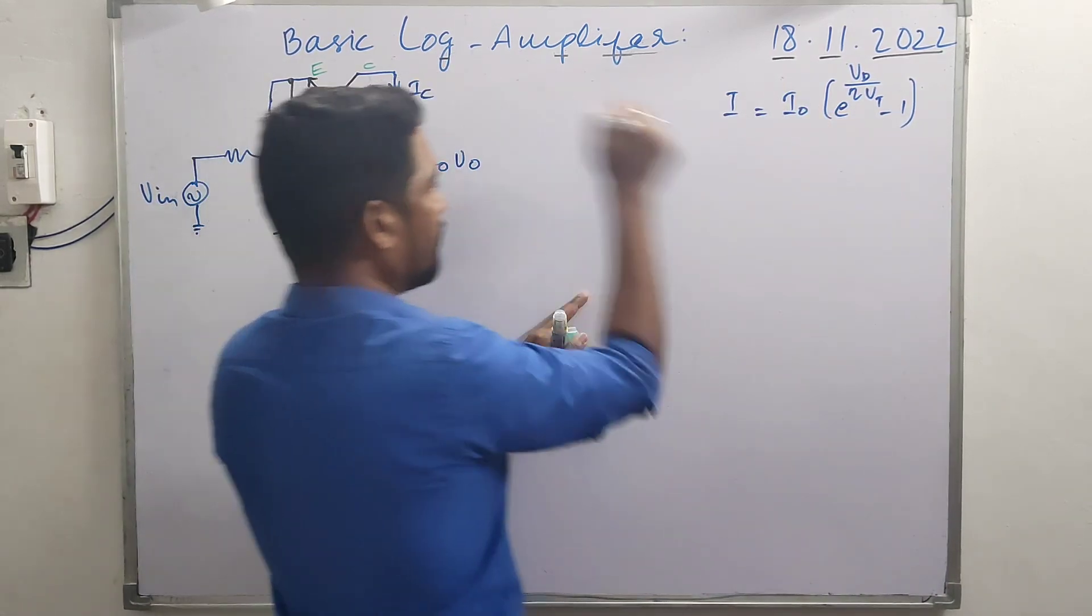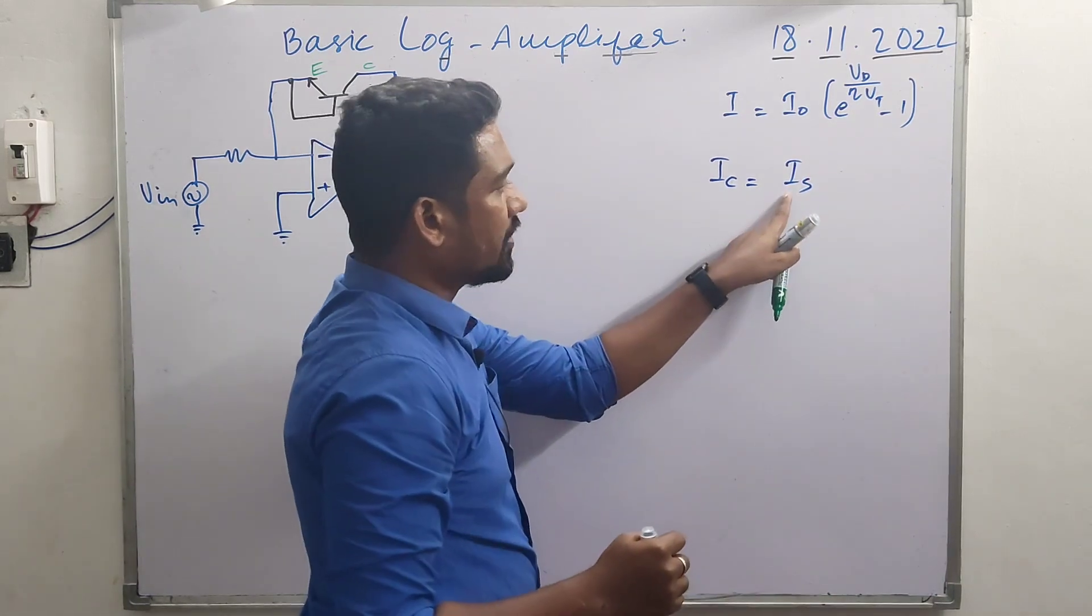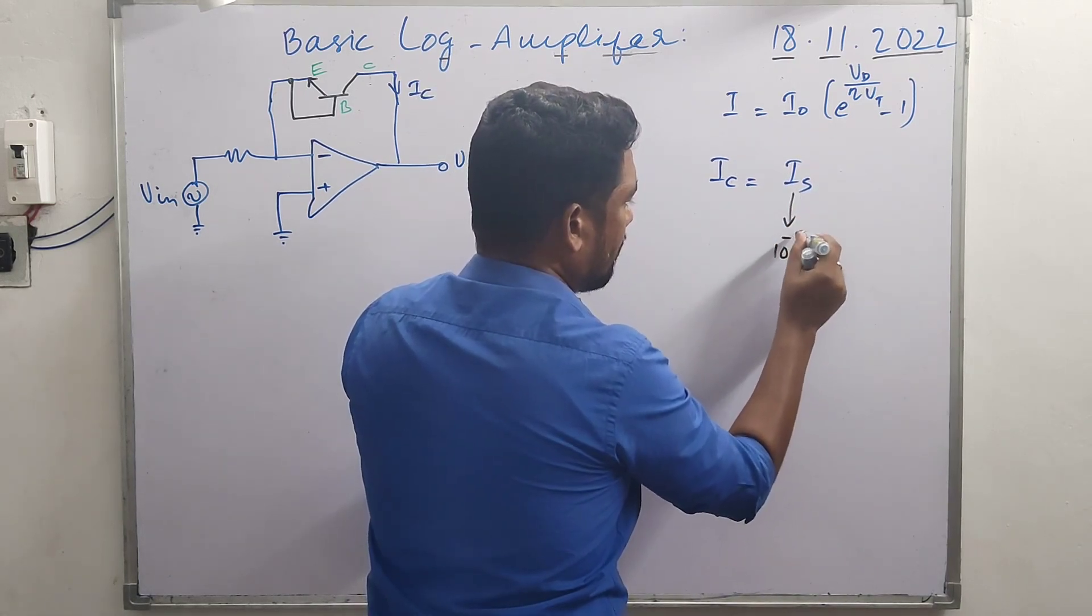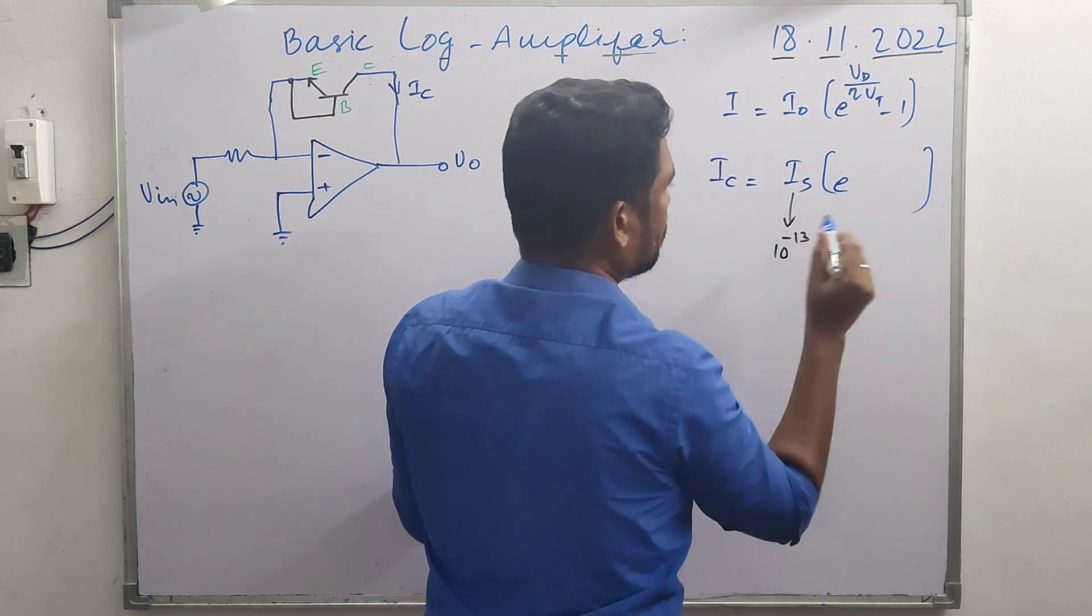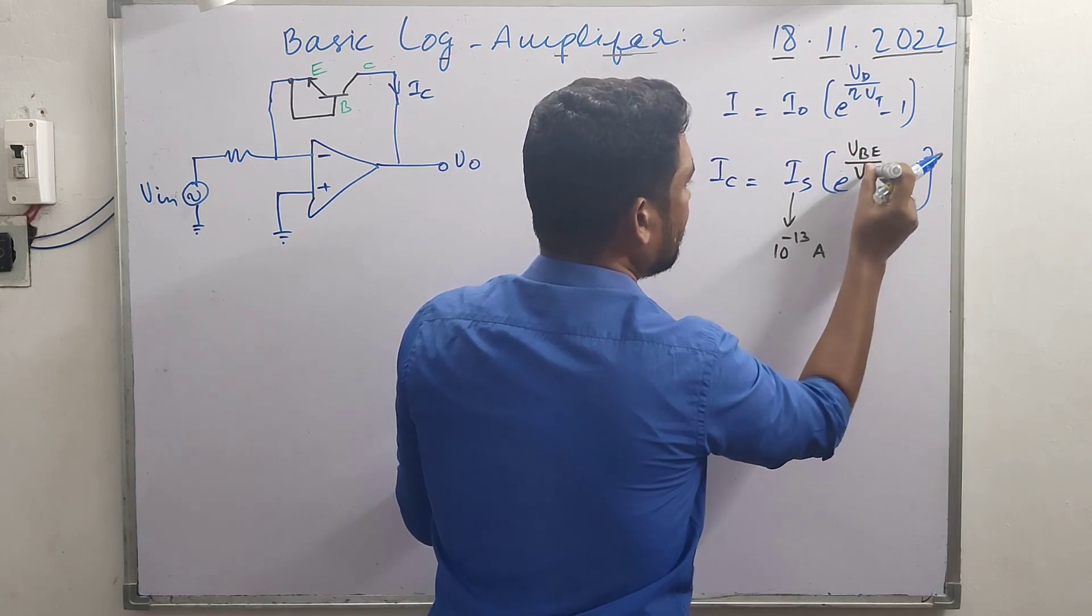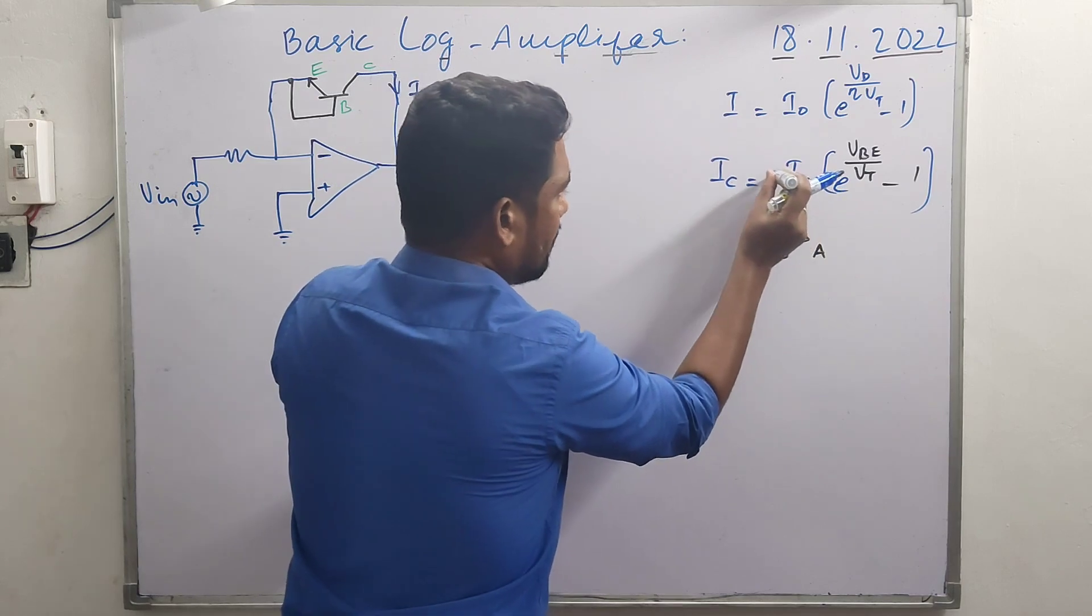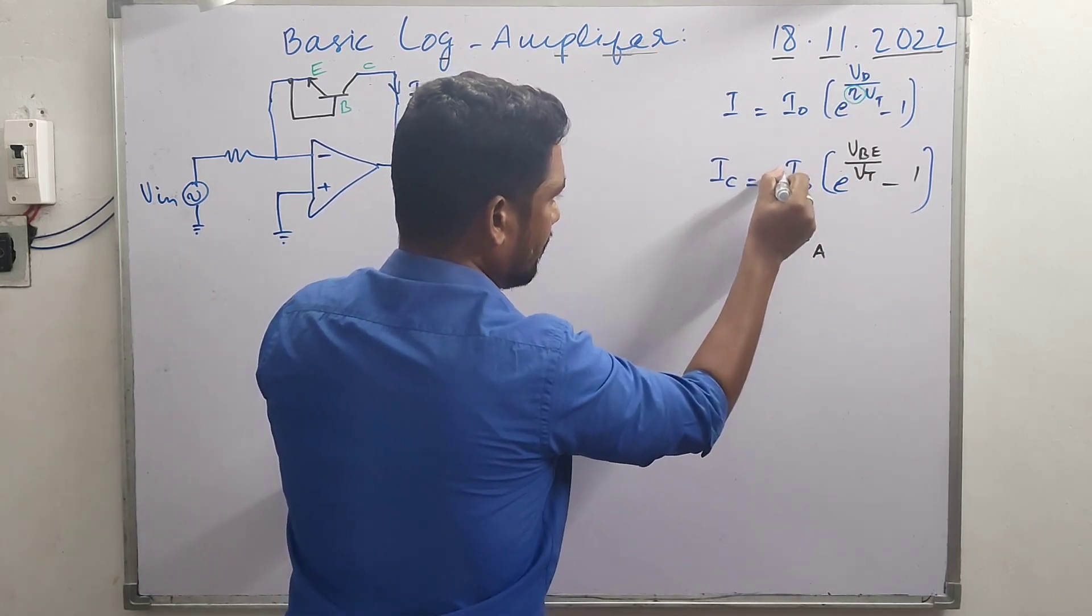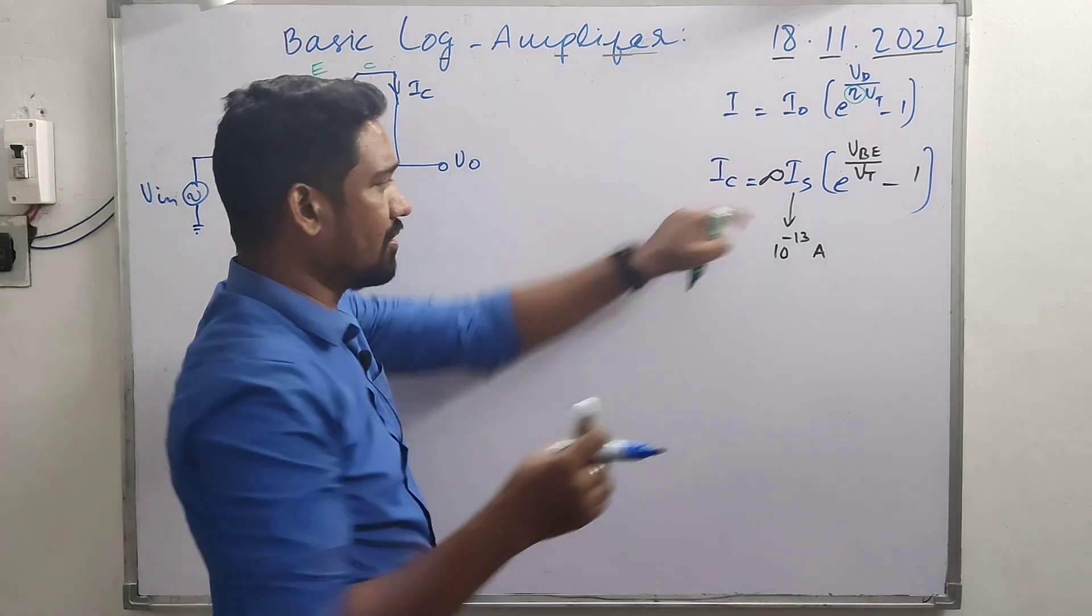Similar to the diode current equation, we have the transistor current equation: I_C = I_s (emitter saturation current, specified by manufacturer, around 10^(-13) amperes) × (e^(V_BE/V_t) - 1), where V_t is the volt equivalent of temperature, equal to 26 millivolts at room temperature. Alpha value is very much approximately equal to one (0.99998).